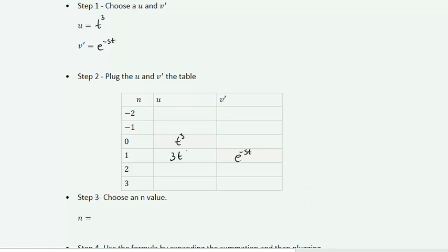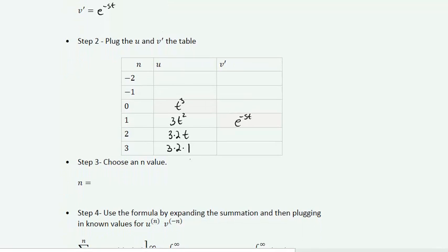Taking derivatives of t cubed, we get 3t squared, then 3·2t, then 3·2·1. When we take successive derivatives of any polynomial, we always get an n factorial term, where n is the degree of the polynomial. The successive integrals of e^(-st) are: e^(-st)/s (negative), e^(-st)/s² (positive), and e^(-st)/s³ (negative).